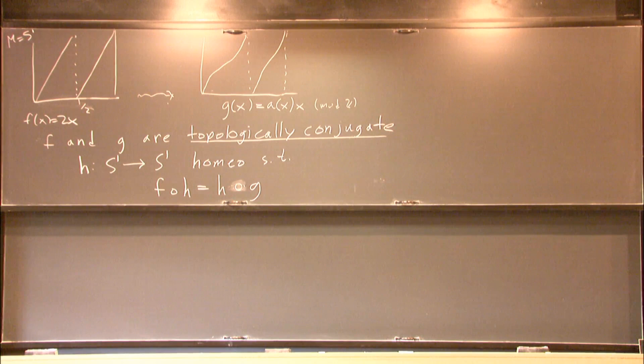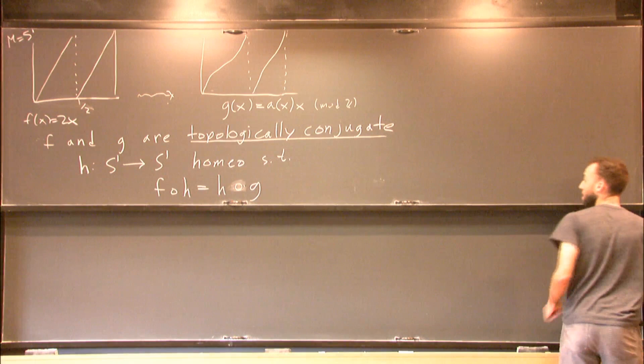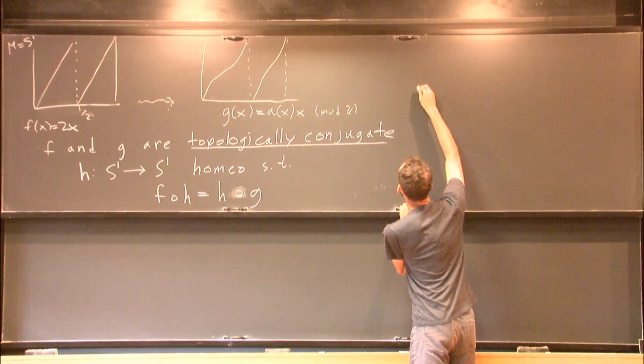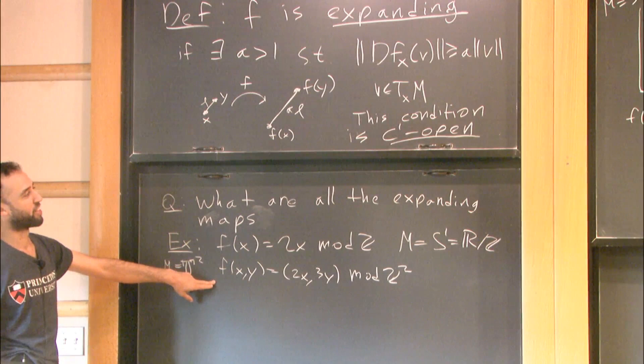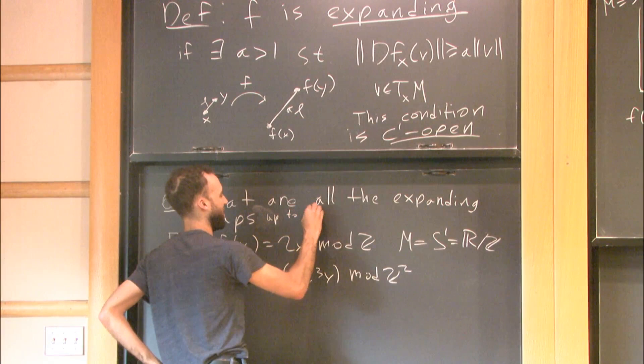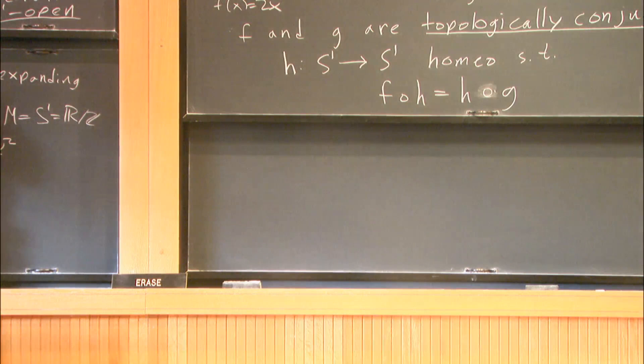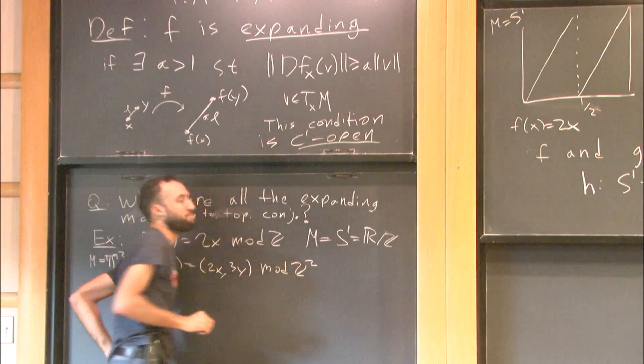And you can prove a similar fact on the other tori, on the higher dimensional tori, that if you write down any expanding map, it's going to be topologically conjugate, in this fashion, to its action on the fundamental group of the torus. So I will revise my question up to topological conjugacy.